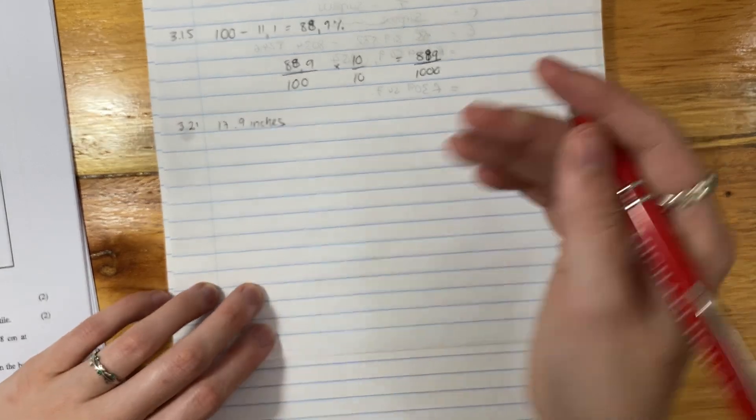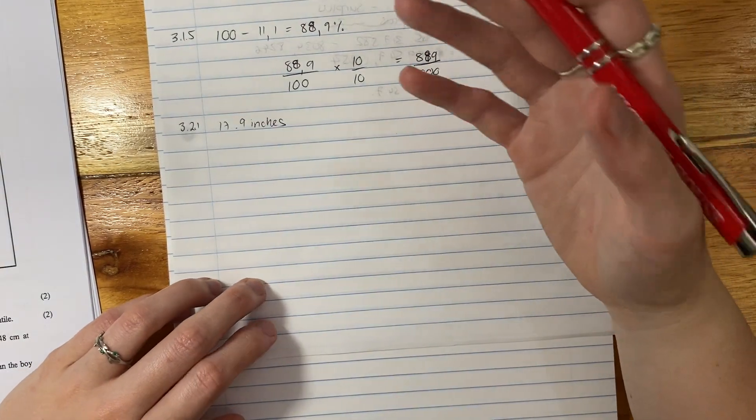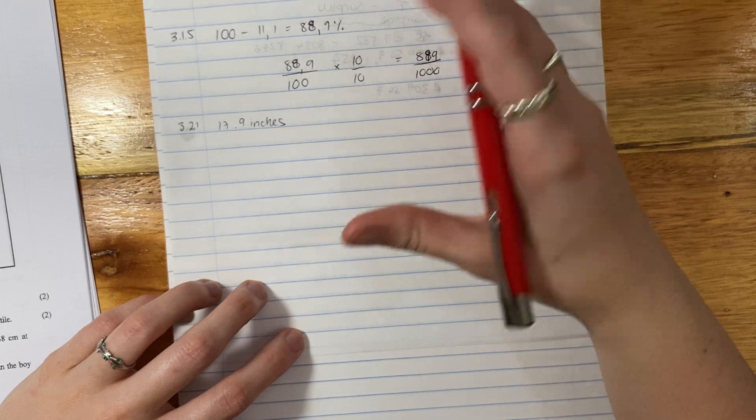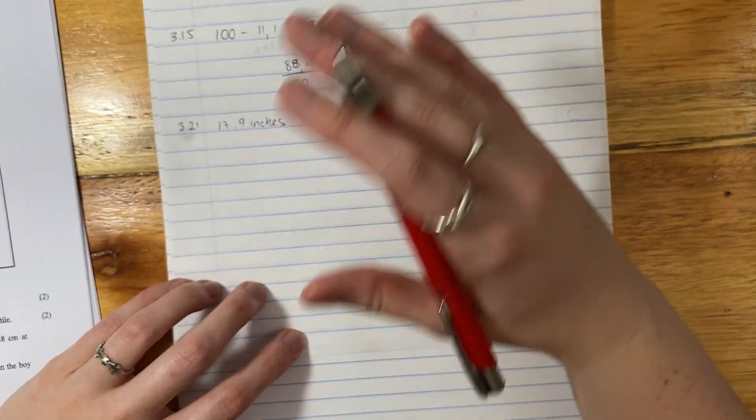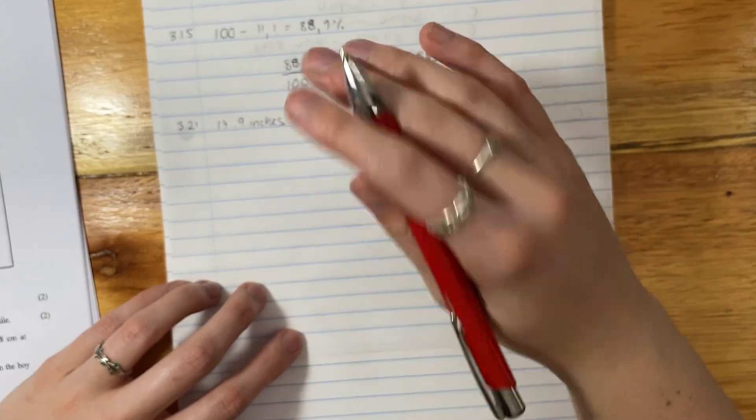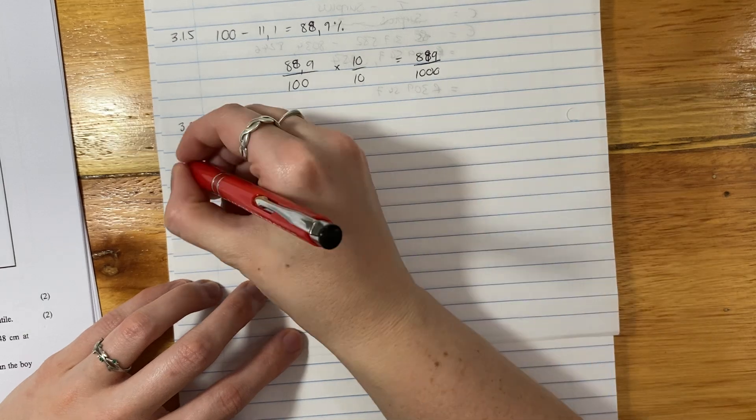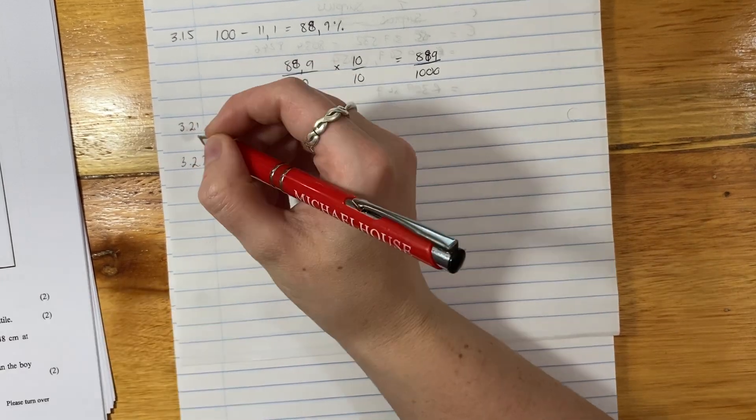Now, you could be saying, oh, but Maggie, like I got 17.8, I got 18. Remember, they give you leeway. Anything between 7, 8 and 18, they would have given you the marks. So don't stress. Remember to put in your measurement, though. Let's move on.